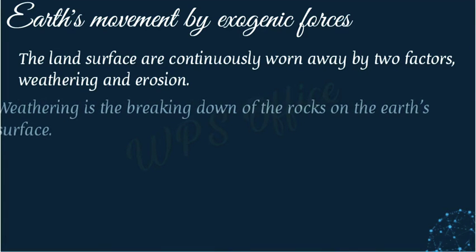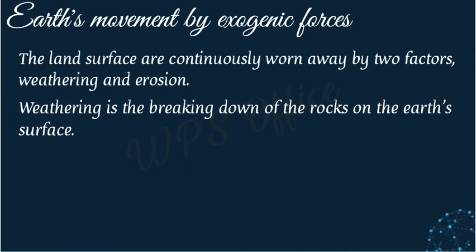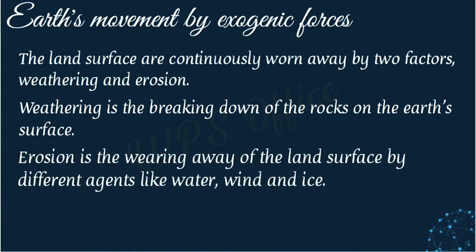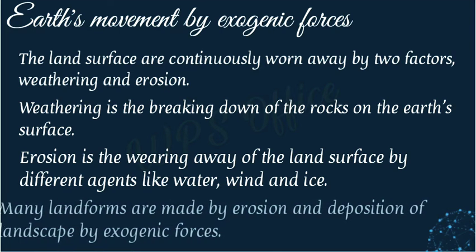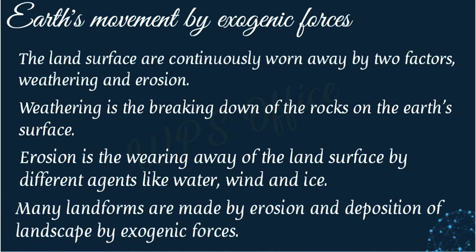Weathering is the breaking down of rocks on the earth's surface. Weathering means that due to changes in weather — sun, rain, water, etc. — rocks on the ground break into smaller and smaller pieces. In addition to weathering, erosion also occurs due to the flow of water, blowing of wind, or melting and sliding of ice, causing great breaking and wearing down of the earth's surface.